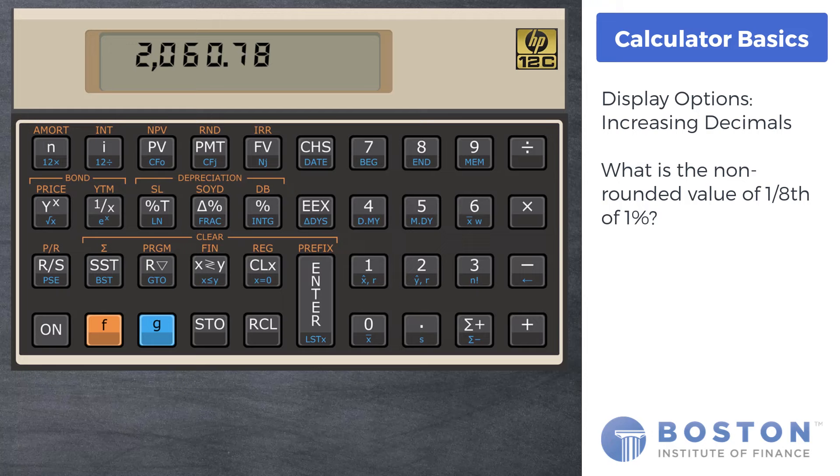Begin with pressing CLX. Follow with this sequence. First let's find 1/8th. 1, enter, 8, division key. The display reads 0.13 and that is a rounded value. Let's increase to 3 digits. Press the orange F key and then the 3 on the keypad. This increases the display to 3 digit accuracy.